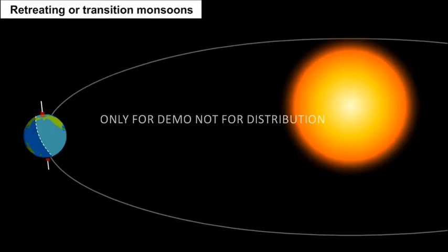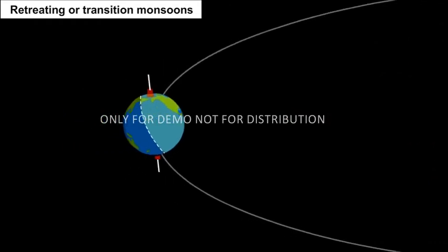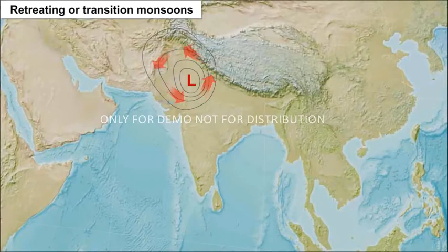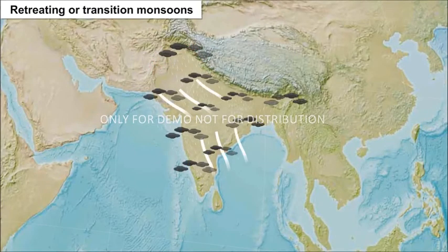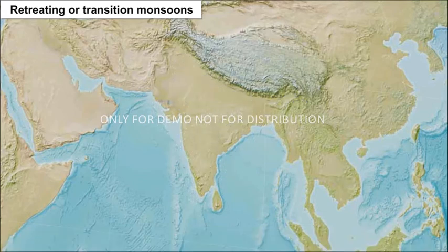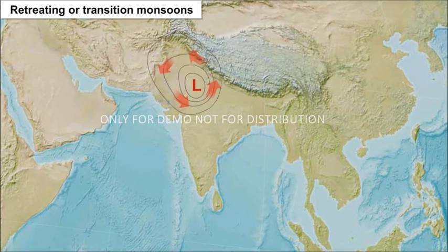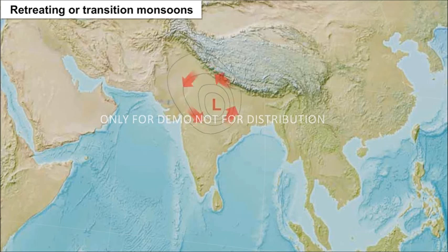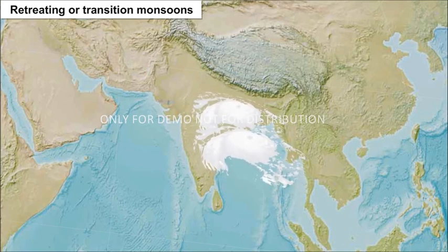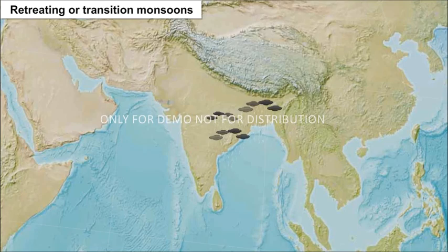Retreating or transition monsoons. Due to the apparent movement of the sun towards south in October and November, the low pressure over the northern plains weakens and the southwest monsoon winds begin to withdraw. By early October, the monsoons withdraw completely. By mid-October, temperature falls rapidly in northern India. The low pressure conditions over northwestern India shift to the Bay of Bengal by early November, giving rise to cyclonic depressions. These cyclones bring heavy rains on the eastern coast of India.